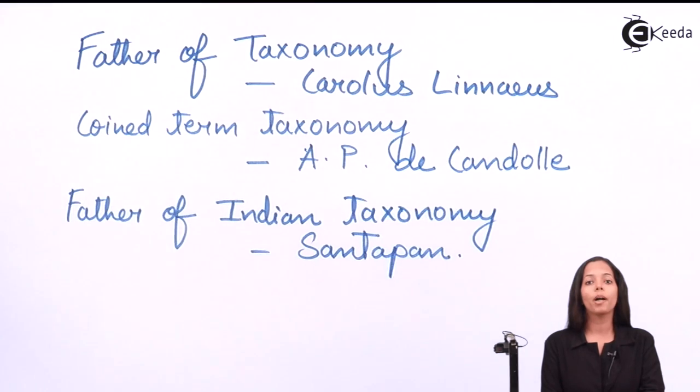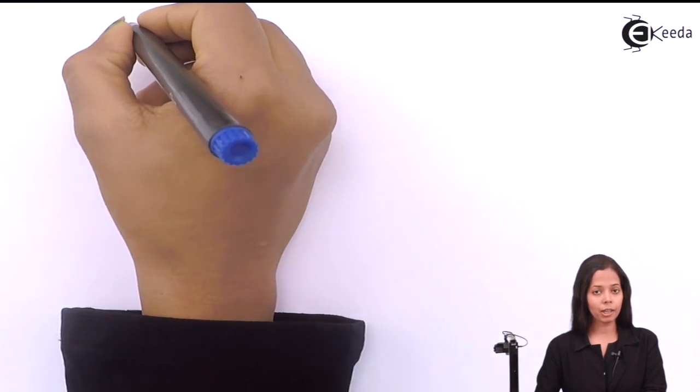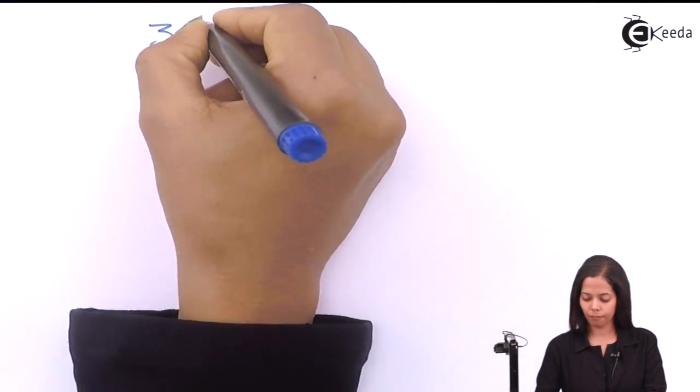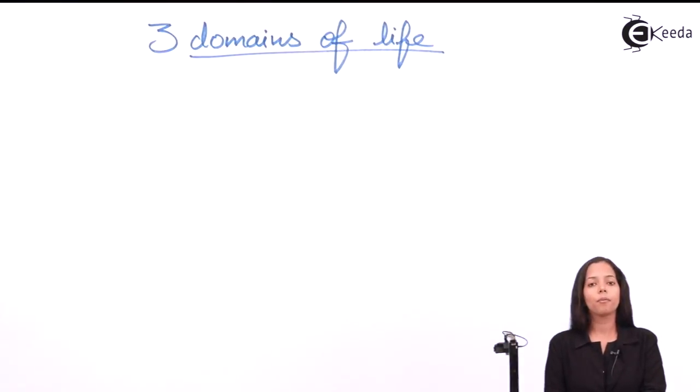These are few things which you have to remember from taxonomy or five kingdom classification point of view. Now we'll start with domains of life. There are three domains of life, that is why the topic name is three domains of life.